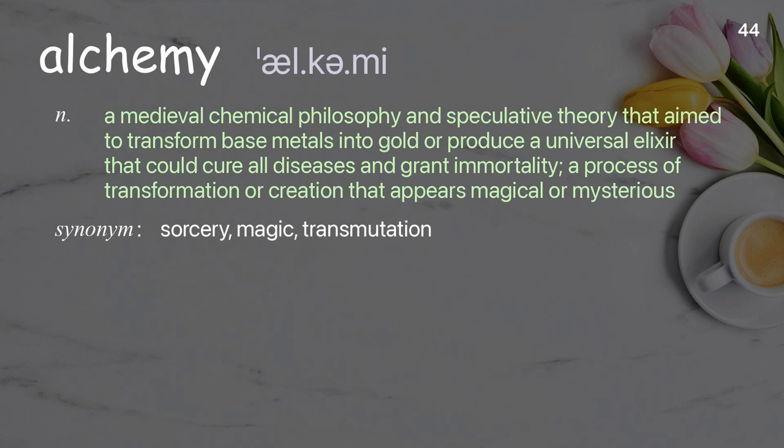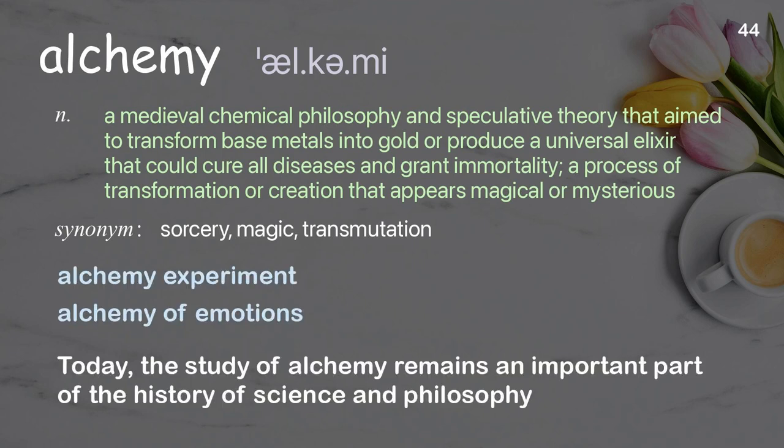Alchemy: a medieval chemical philosophy and speculative theory that aimed to transform base metals into gold or produce a universal elixir that could cure all diseases and grant immortality; a process of transformation or creation that appears magical or mysterious. Examples: alchemy experiment, alchemy of emotions. Today, the study of alchemy remains an important part of the history of science and philosophy.